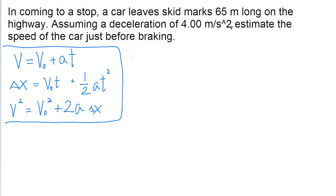In this problem, we are trying to find the speed of the car just before it began braking. We're looking for the initial speed of the car immediately prior to the brake. So V0 is the unknown.